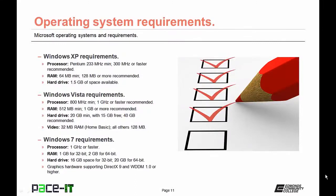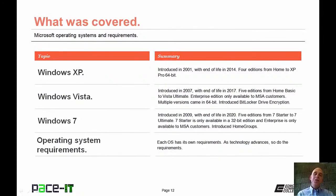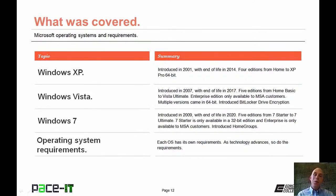Microsoft upped the ante on video with Windows 7 — there was no RAM requirement, but a capabilities requirement. The video card had to support DirectX 9 and WDDM 1.0 or higher. That concludes this session — we talked about Windows XP, Windows Vista, and Windows 7 and gave a brief rundown on the basic system requirements for each.